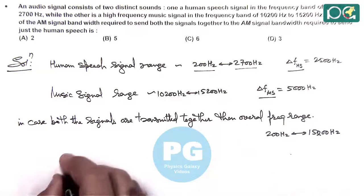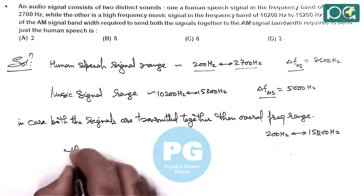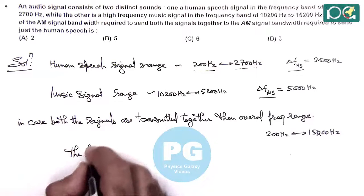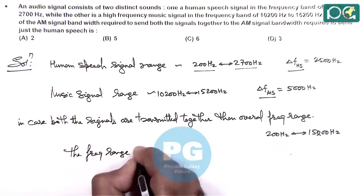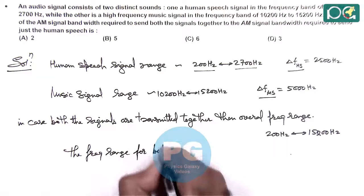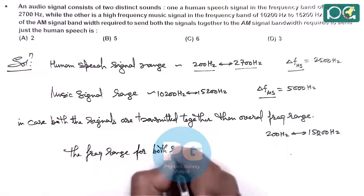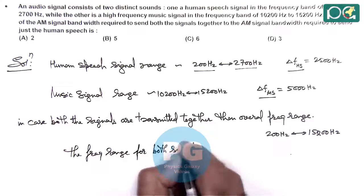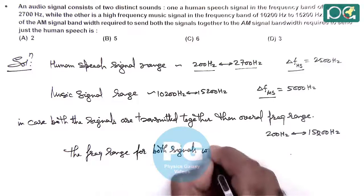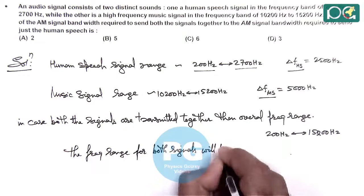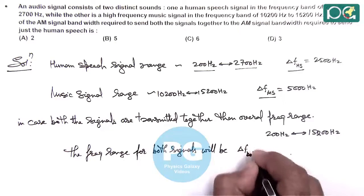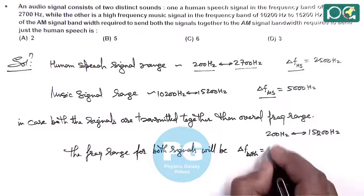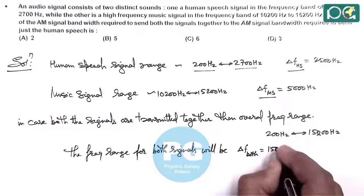We can calculate the frequency range for both signals together. This gives us delta f for both together as 15200 minus 200, which equals 15000 Hz.